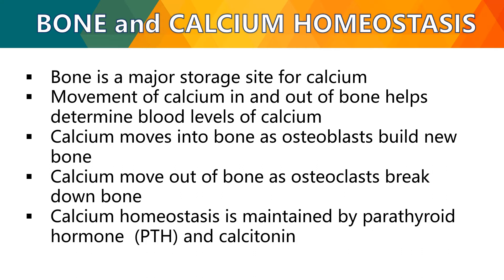Movement of calcium in and out of the bone helps determine blood calcium levels. Calcium moves into bones as osteoblasts build new bone, and moves out as osteoclasts break down bone. Calcium homeostasis is maintained by parathyroid hormone and calcitonin.